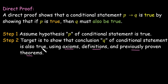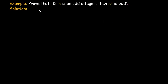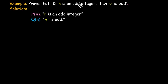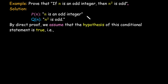Let's understand with an example. We need to prove that if n is an odd integer, then its square is also odd. First, identify the hypothesis p(n): n is an odd integer — we take this as true. The conclusion q(n) is that n squared is odd, which we need to show.